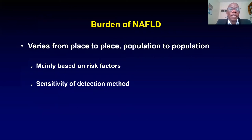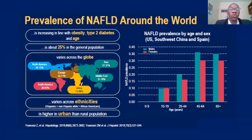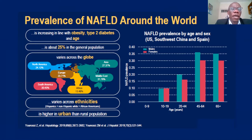The burden of NAFLD varies from place to place and from population to population, and is really based on the risk factor distribution and the sensitivity of the detection methods used. In terms of global prevalence, it is thought that about 25% of the general population have NAFLD. Diabetes and obesity form part of the major risk factors for NAFLD.